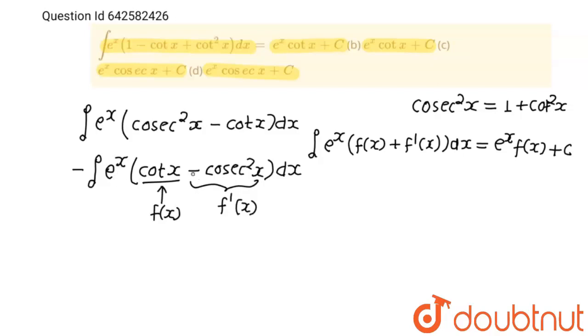So now, I have given minus sign to cosec square x, it means that the sign between cot x and minus cosec square x is positive. So now, this integration is based on this formula.